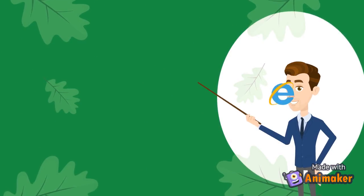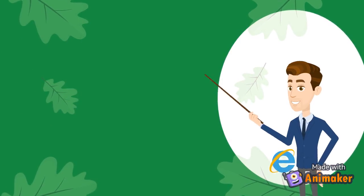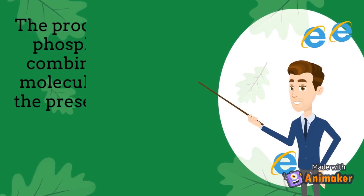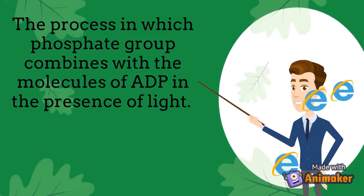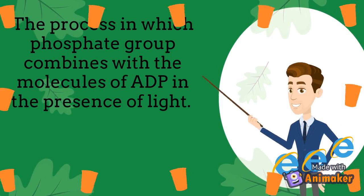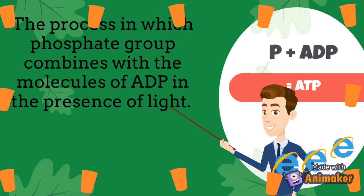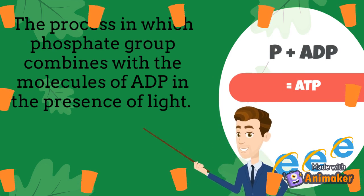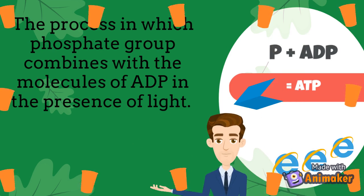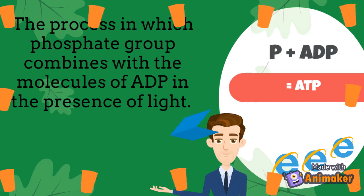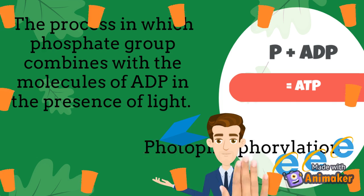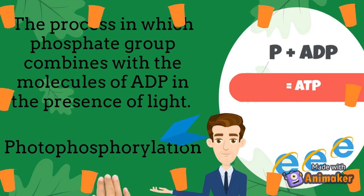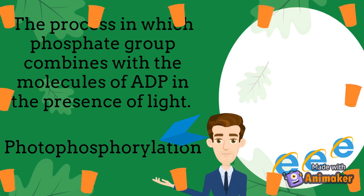Some of the electrons from the electron transport chain are used to make adenosine diphosphate, or ADP, into adenosine triphosphate, or ATP. The process in which a phosphate group combines with the molecules of ADP in the presence of light is called photophosphorylation.